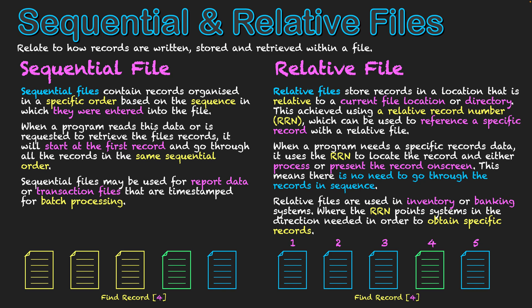The major difference between sequential and relative files is the use of a number allocated to each record in the relative file format. This means we don't have to go through all records in sequence as we do with a sequential file. Instead, we can specify which record we want and, based on that index number, find it directly, present it on screen, and process it straight away.